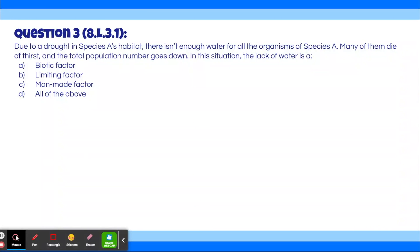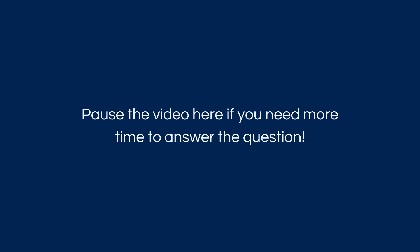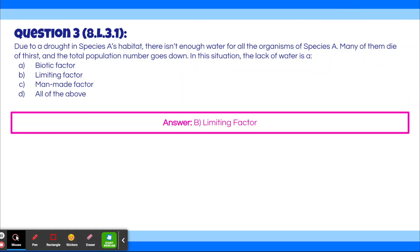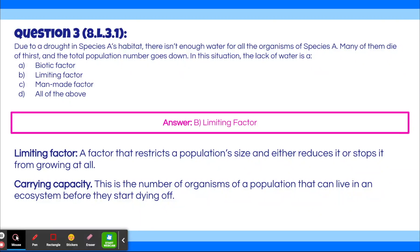Question 3. Due to a drought in species A's habitat, there isn't enough water for all organisms of species A. Many die of thirst and the total population goes down. In this situation, the lack of water is: A. Biotic factor, B. Limiting factor, C. Man-made factor, D. All of the above. The answer is B, limiting factor. A limiting factor is a factor that restricts a population size, either reducing it or stopping it from growing. Examples include a scarce resource, a natural disaster, or a disease.